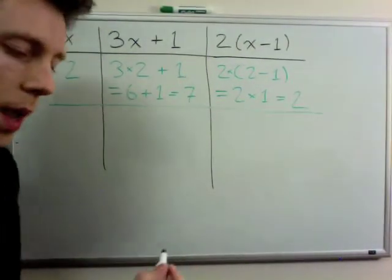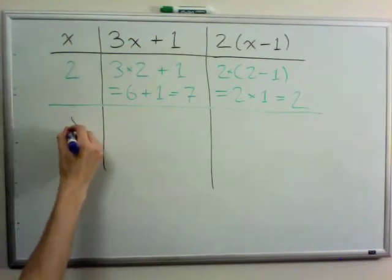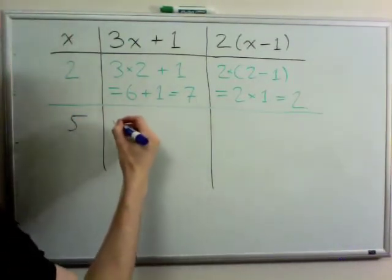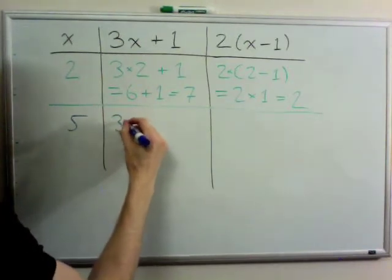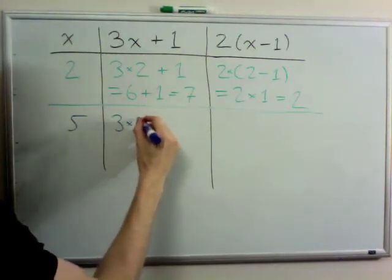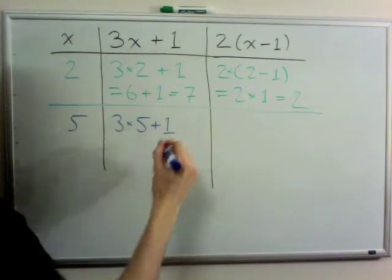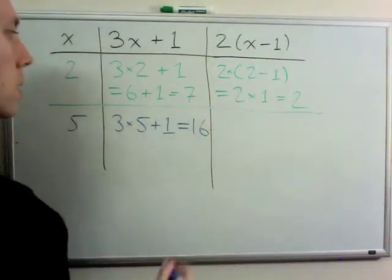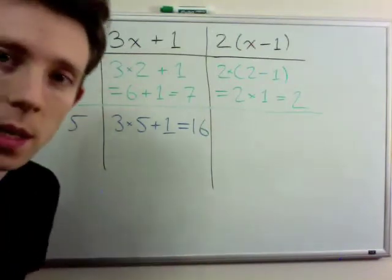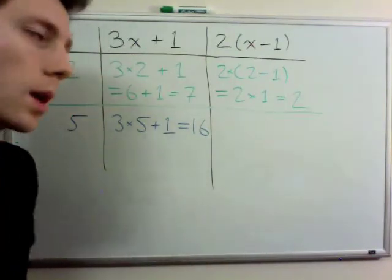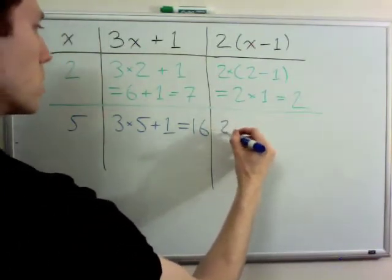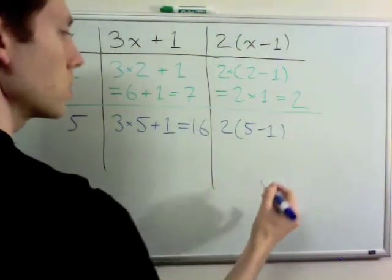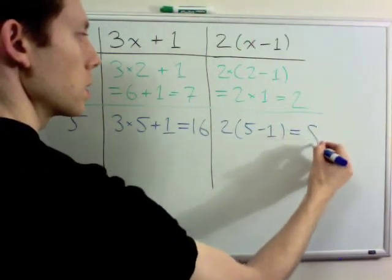What happens if I plug in 5 for x? We're saying x is equal to 5. Here we'll have 3 times 5 plus 1. That's 16. And in the second expression, 2 times the quantity x minus 1 will have 2 times 5 minus 1. That's 2 times 4, which is equal to 8.